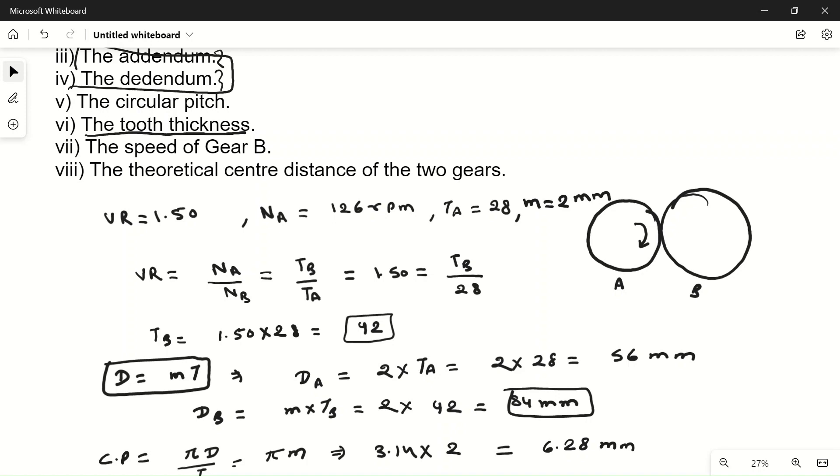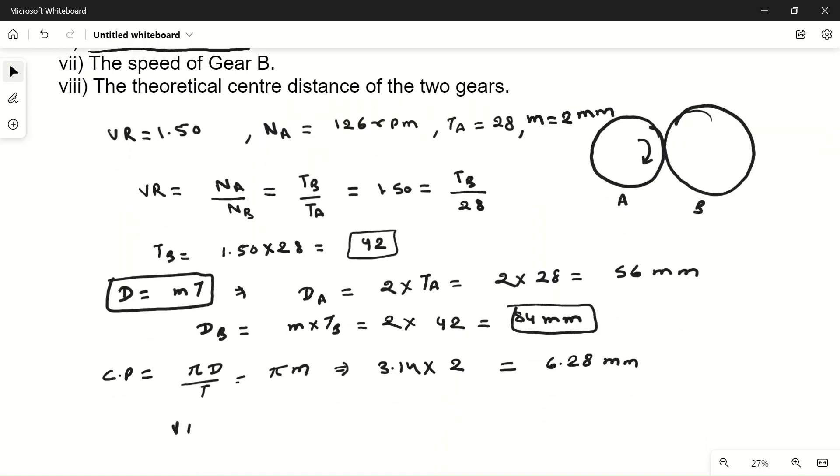The speed of gear B. Velocity ratio 1.5 is equal to NA upon NB, which is equal to 126 upon NB. So NB is 126 divided by 1.5, which will be equal to 84 rpm. This will be the speed of gear B.